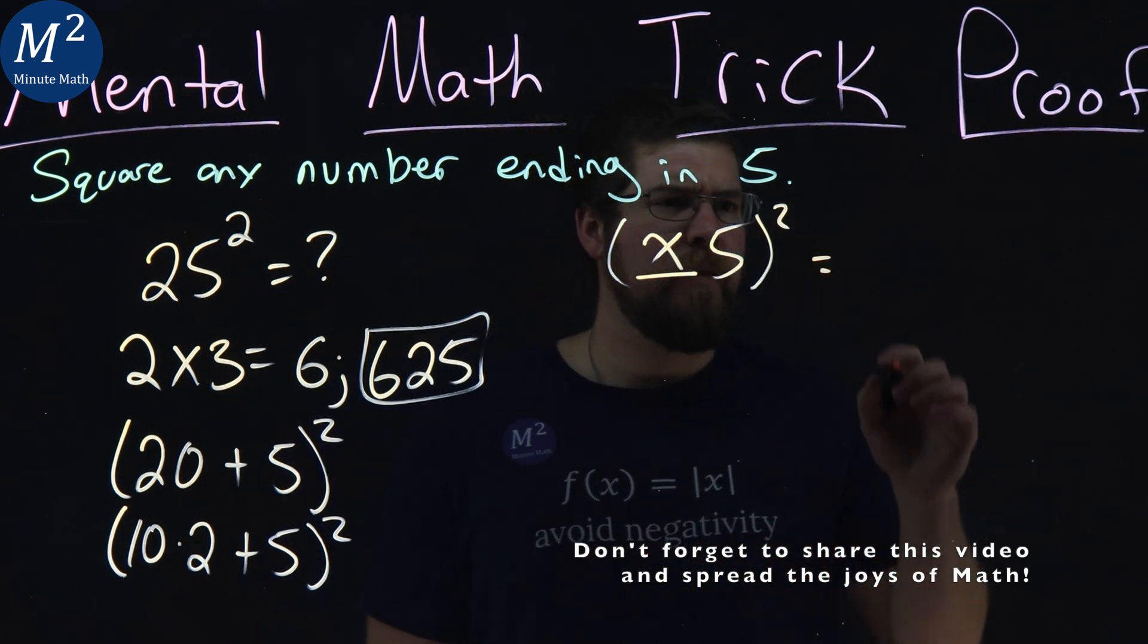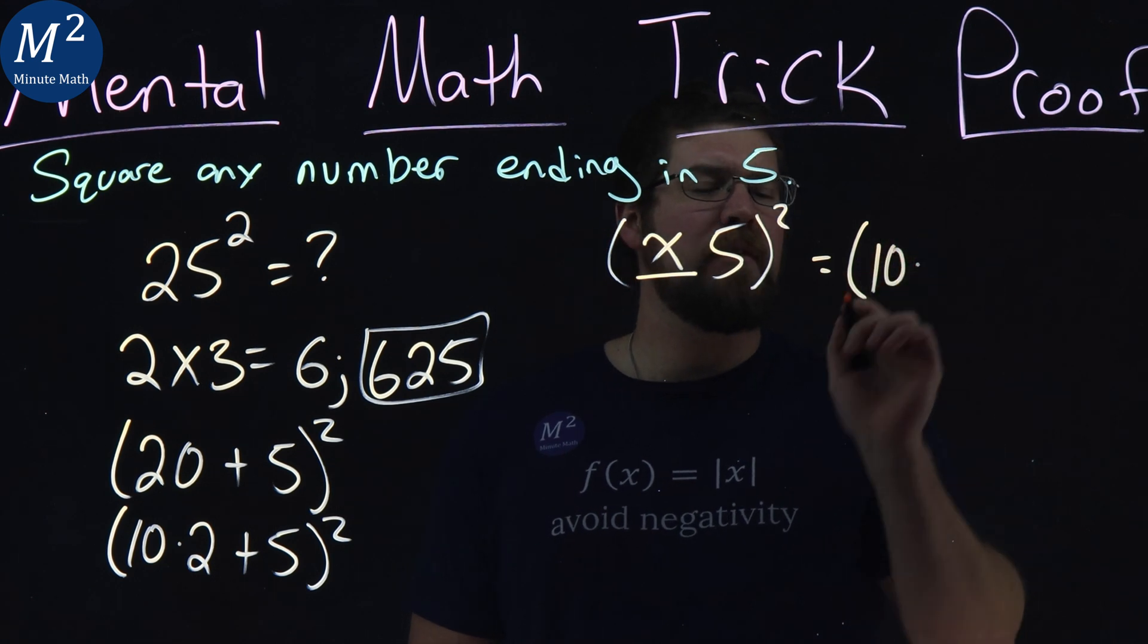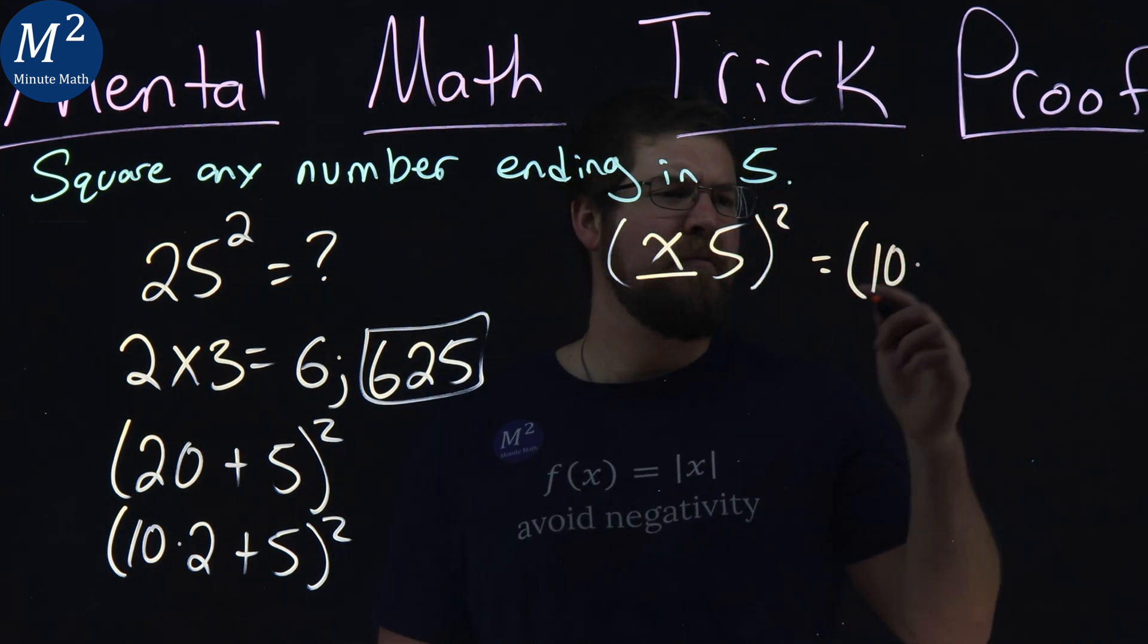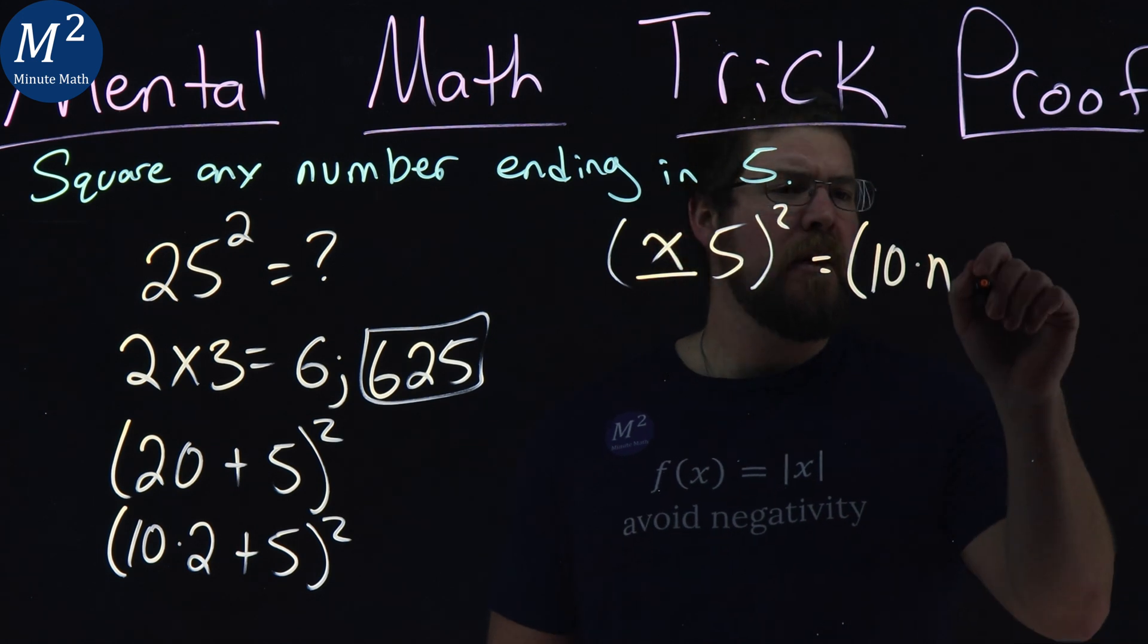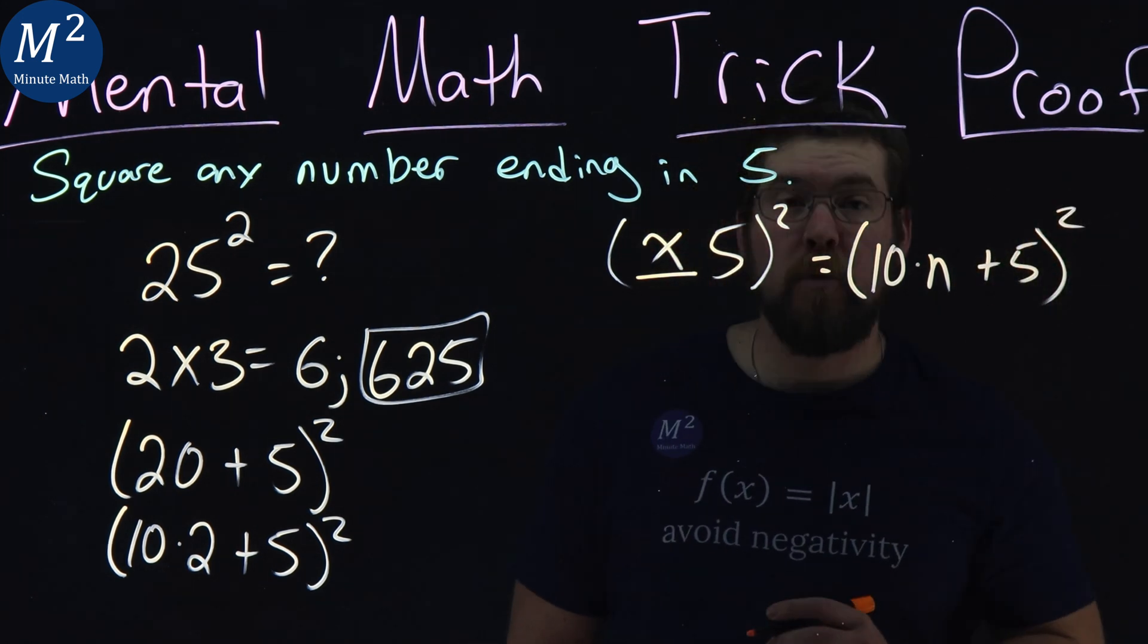So if I rewrite this, I really just have 10 times some integer, some value, let's call it n, plus 5 all squared.